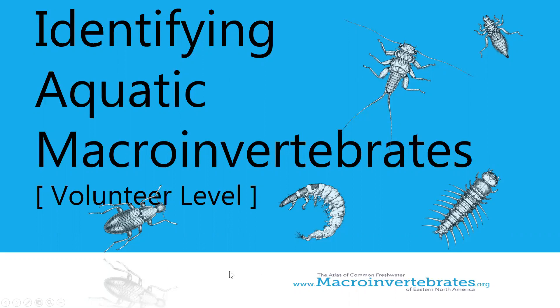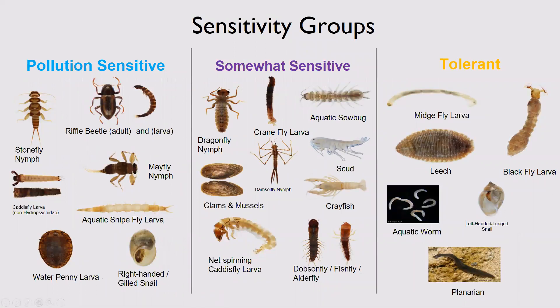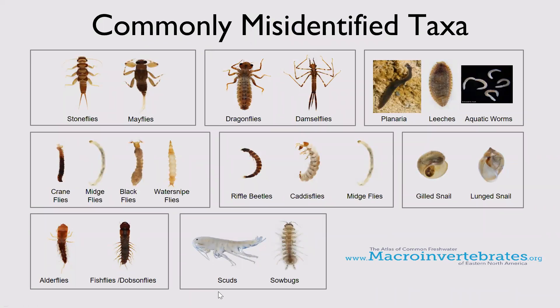Some examples from the slide deck: one slide goes over tips for diving into ID, such as paying attention to size ranges, starting slowly one order at a time, and being aware of instars and life cycle phases. There are additional slides that go into some of these topics more in depth. There's also a slide on general sensitivity groups, and subsequent taxa slides are organized accordingly. You can rearrange the view according to your sensitivity groupings in your region — it's a great slide to send ahead of time as a PDF or have printed at the workshop for each attendee to reference.